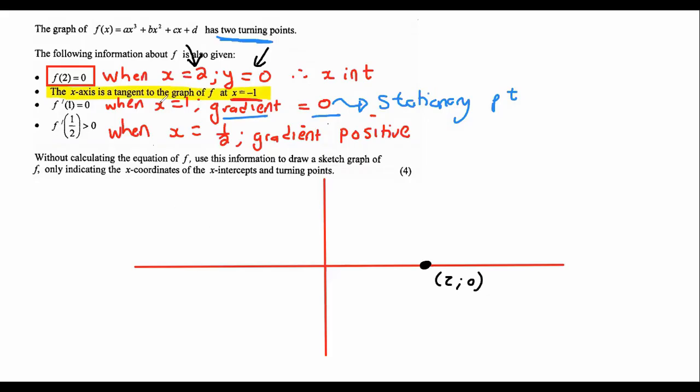So it says that the x-axis, now remember, this is the x-axis. They said that the x-axis is a tangent when x is minus 1. So when x is minus 1, that's about here.